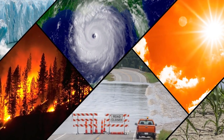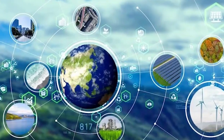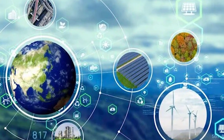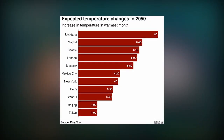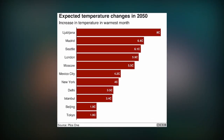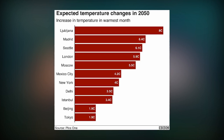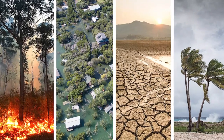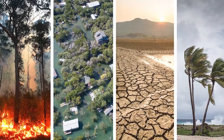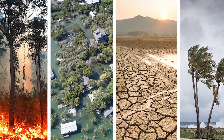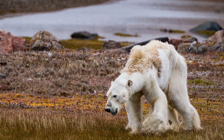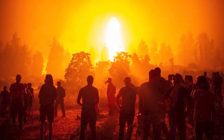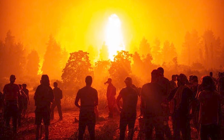Problem 1: Climate Change. Climate change is one of the biggest concerns for our planet's future. According to the United Nations, the average global temperature is expected to rise by 2-3 degrees Celsius by 2050, leading to more frequent and intense heat waves, droughts, and natural disasters. This will result in the loss of habitats and food sources for many species, and displacement of millions of people.